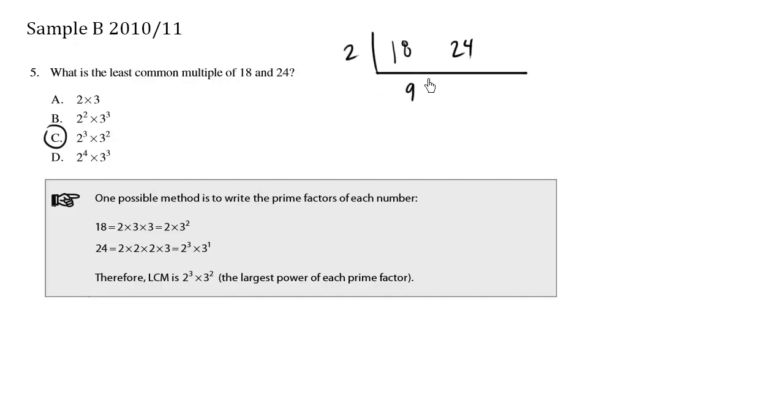So this here is going to be 9. 2 times 9 is 18. We have 2 times 12 is 24. But we recognize that we can pull out another factor, which is the number 3. 3 times 3 is 9, 3 times 4 is 12.